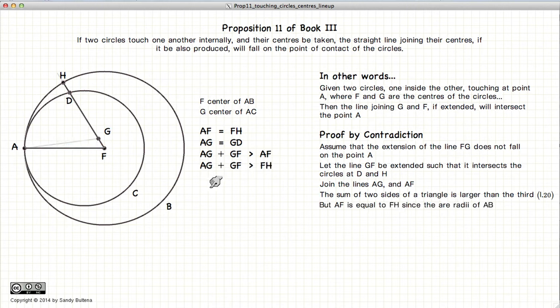Now we have that AG plus GF is greater than FH, because AF is equal to FH as they are the radii of the larger circle. Let's subtract GF from both sides of this inequality. We have AG is greater than FH minus GF. And what is FH minus GF? FH minus this little gray bit gives us GH. So we have that AG is greater than GH.